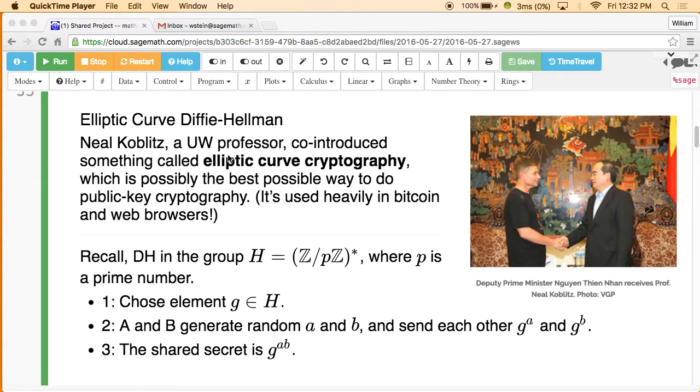Here's Neal Koblitz. He's the one on the left, shaking hands with the deputy prime minister of Vietnam, who's on the right. He's also a UW math professor, so you may have taken or will take a class from him at some point. But he does a lot of traveling around to places in the world.